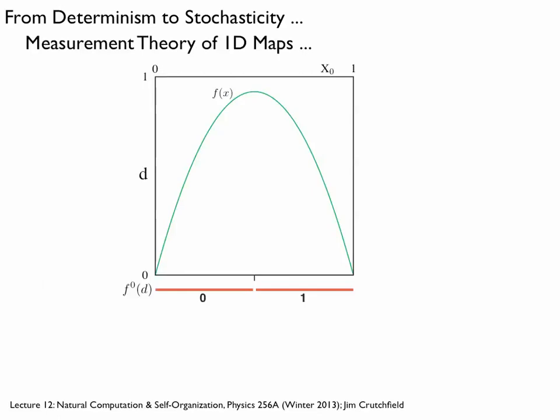Let's think about a one-dimensional map — our favorite logistic map. Here's the state space, zero to one. The green function tells you how to map the current state to the next state. I'm going to propose measuring the current state x₀ on the interval with a binary measuring instrument. This instrument does a very simple thing: if the state is between zero and a half, the instrument returns zero. If the state is greater than a half and less than one, the instrument returns one. At one time step, I've thrown away an infinite amount of information — I just know left or right of this decision point d.